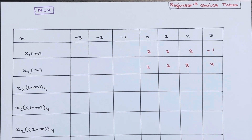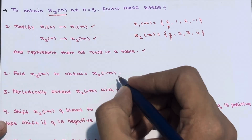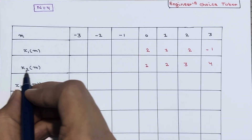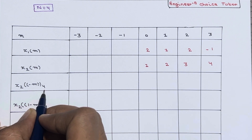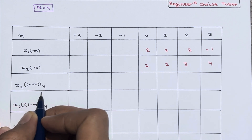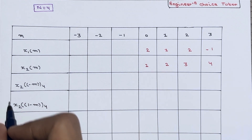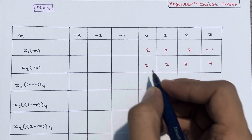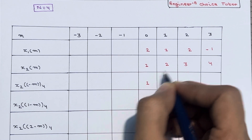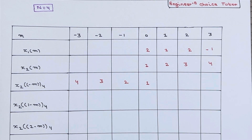Step 2: Fold x2(m) to obtain x2(-m). We take the folded version of x2(m). The sequence x2(-m) will have values 1, 4, 3, 2 — note that '4' here represents that it is a 4-point sequence. So we now have x2(-m) obtained by folding.